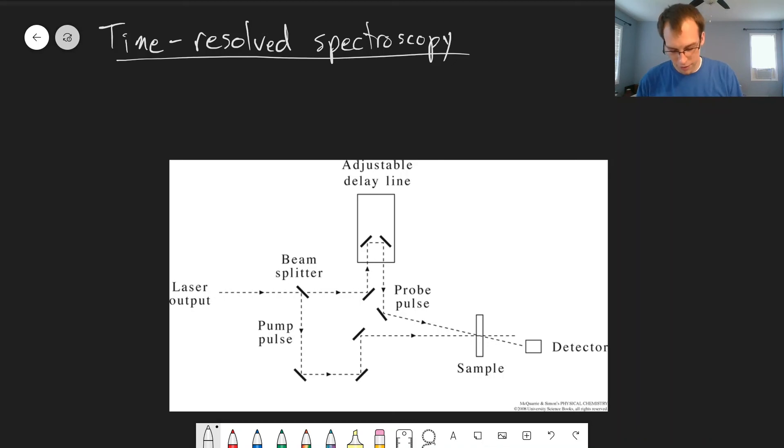This takes advantage of the fact that laser pulses can be very short. We can generate laser pulses with pulse lengths on the order of nanoseconds down to picoseconds, and even femtosecond lasers are possible.